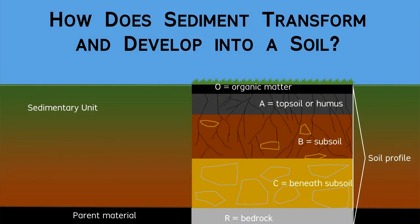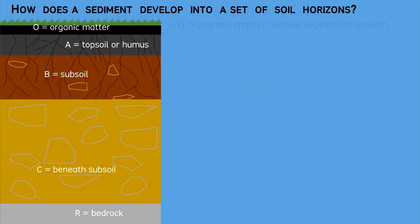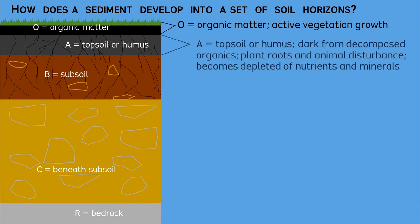Usually, the surface is equated with an organic horizon, sometimes called the O horizon. Just beneath the organic surface, a soil contains an upper unit of an A horizon. Many people refer to this upper portion as the topsoil, where you can see the effects of organic material decomposing into the sediment. The A horizon tends to contain the most plant roots and animal disturbance.